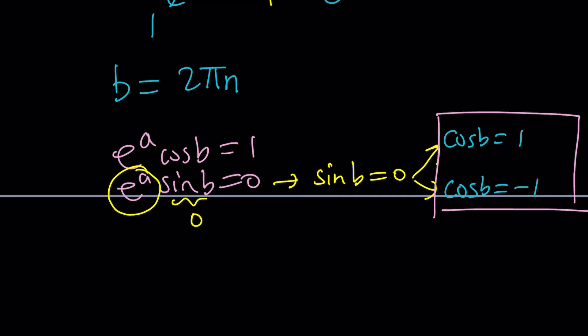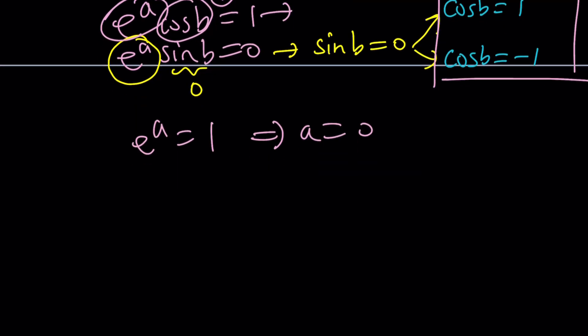So these are the two results that we get from our equation. The problem with one of these is that we also know that E to the A cosine B is one. If cosine B is negative one, then we have to have E to the A being negative, but that's impossible. So cosine B has to be one and E to the A needs to be one, which means A needs to be zero. So from here, we get E to the power A equals one and A equals zero. And sine B equals zero implies that B is equal to two pi n.